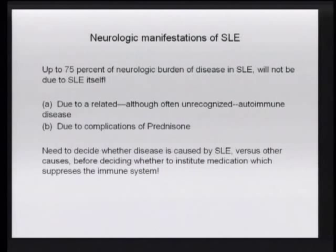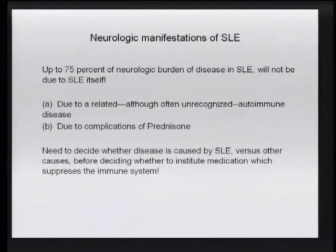When we talk about the neurological manifestations of lupus, it's important to realize that up to about three quarters of the neurological disease you see in lupus is not actually going to be due to lupus. It's often due to a related but unrecognized coincidental autoimmune disorder, or very often it's a complication of treatment such as prednisone. So the first step in the diagnostic paradigm is to figure out: am I dealing with a neurological complication of lupus, or am I dealing with something else — a mimicker?